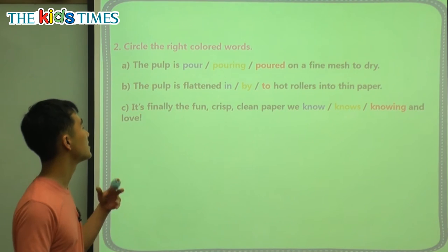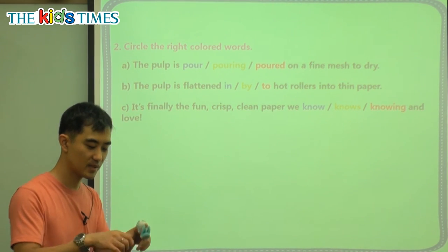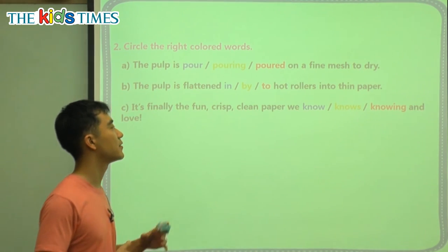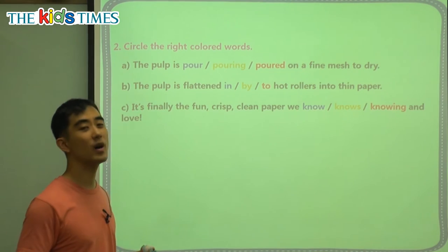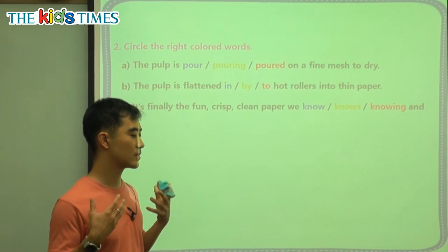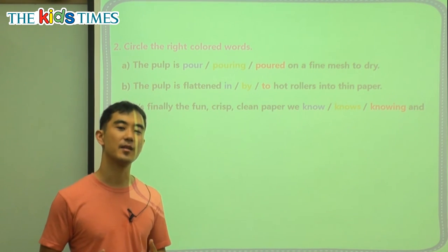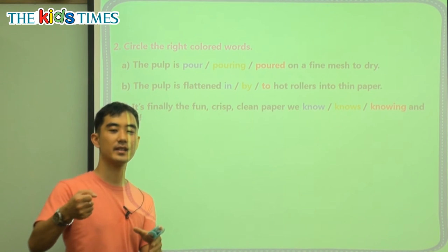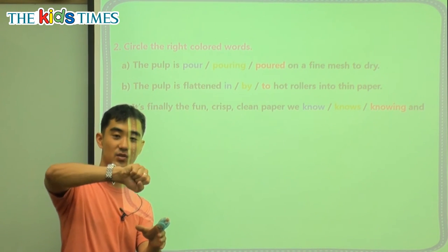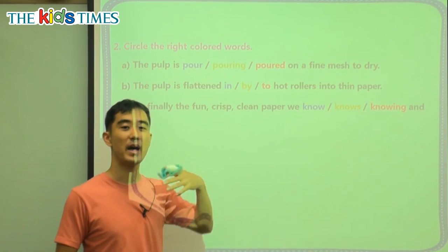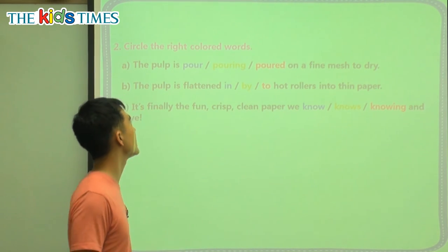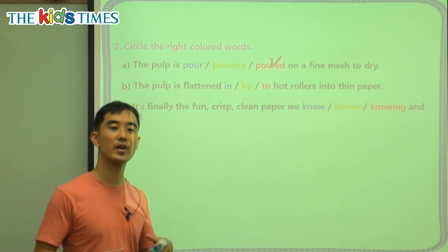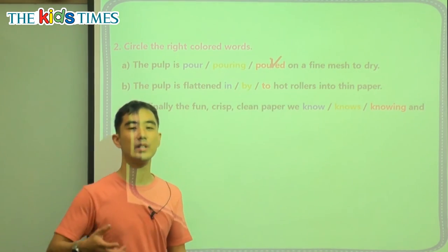We have three grammar questions. A: The pulp is blank onto a fine mesh to dry. We want the past tense. Pouring is what we are doing now. Pour is what we do all the time. Poured is what we did before — so the answer is poured. B: The pulp is flattened blank hot rollers into thin paper. This is a passive sentence. The mouse eats the cheese — or we can say the cheese is eaten by the mouse. When we use a passive sentence, we use 'by.'